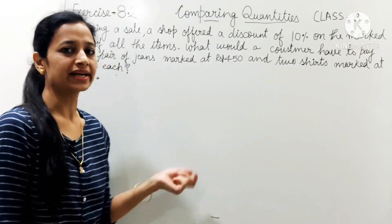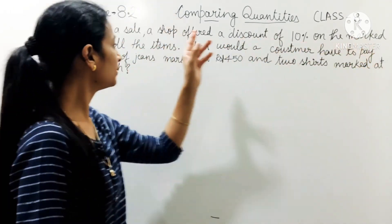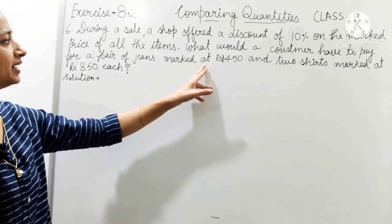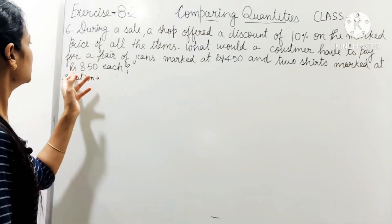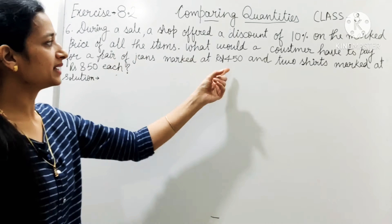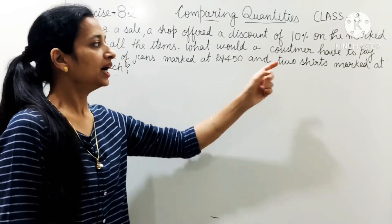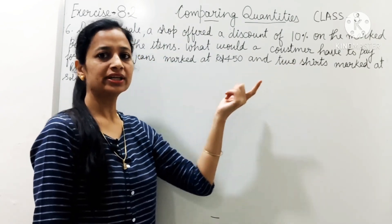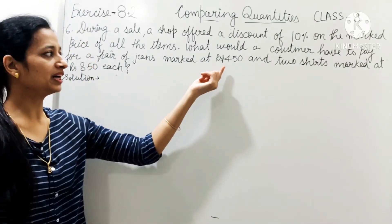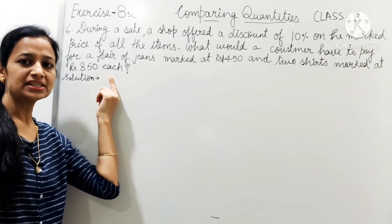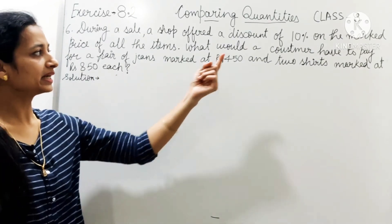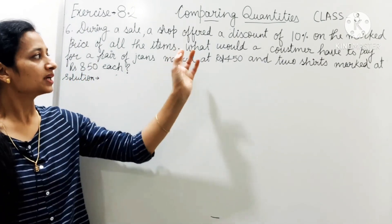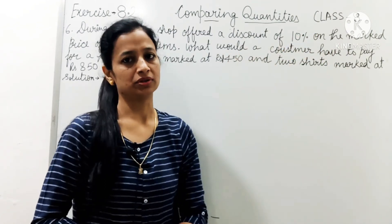Next, question number 6: During a sale, a shop offered a discount of 10% on the marked price of all items. What would a customer have to pay for a pair of jeans marked Rs. 1,450 and two shirts marked Rs. 850 each? Pehle hum nikalenge total mark price, phir 10% discount nikalenge aur use total mark price se minus karenge — toh bill amount mil jayega.